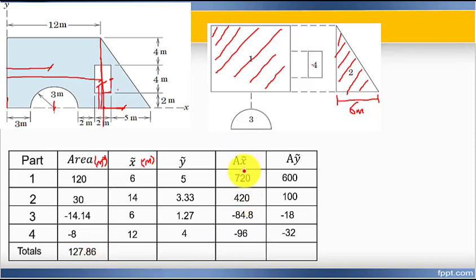The summation of x-tilde times area is 959.2 meter cubed. Finally, x-bar equals summation of x-tilde times area divided by summation of area. This equals 959.2 divided by 127.86, which equals 7.5 meters.